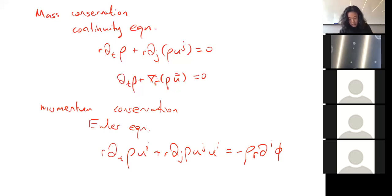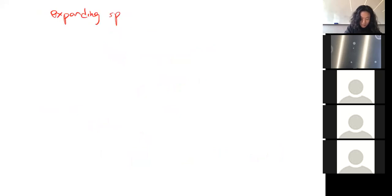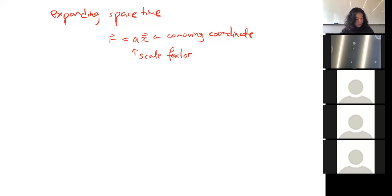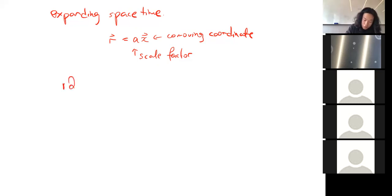But right now solving them is not going to be very interesting because we're still in static space. What we want to do before we start thinking about solving them is to generalize to expanding spacetime. That implies we now no longer have a static distance r; we now have an expanding distance where a is the scale factor and x is the comoving coordinate. x stays constant with time, but the physical distance r, as the universe expands, gets longer and longer.